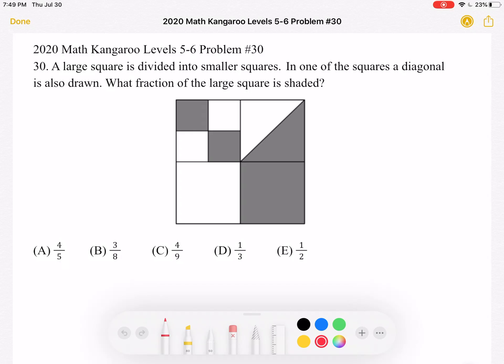A, 4 fifths, B, 3 eighths, C, 4 ninths, D, 1 third, or E, 1 half.